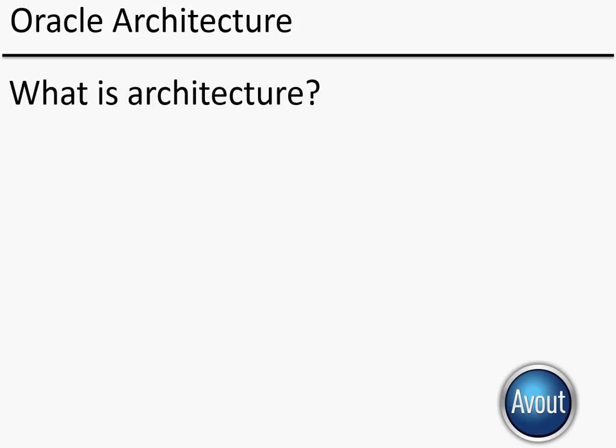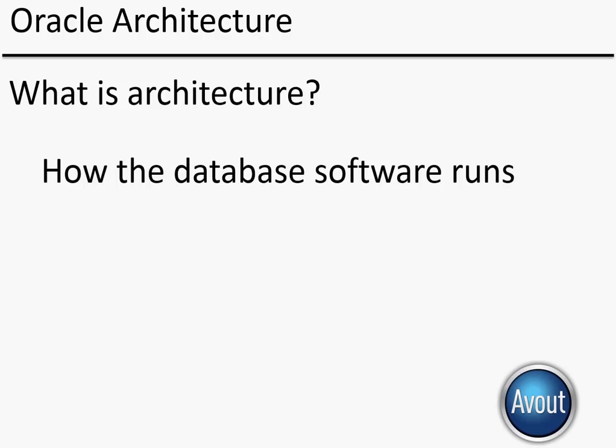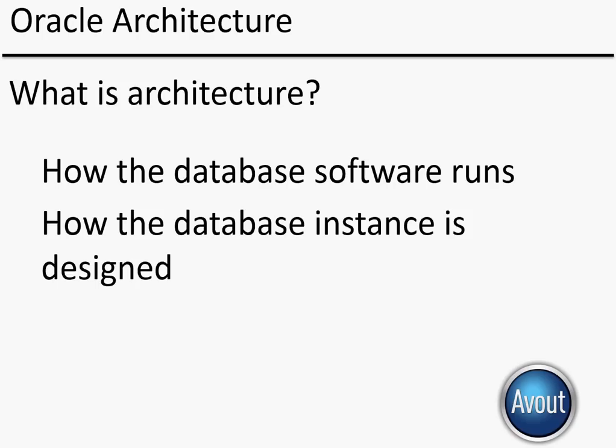So let's take a look at the fundamental question of what is architecture. In terms of running an Oracle database there are two things we really care about: how the database software runs and how it was installed on your system, and how the database instance is designed. We're going to spend most of our time on that second point — how the actual database instance is designed — which is a key determining factor for flexibility, security, and performance going forward.